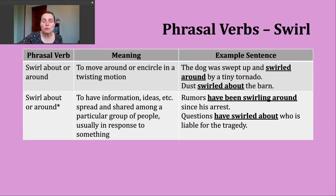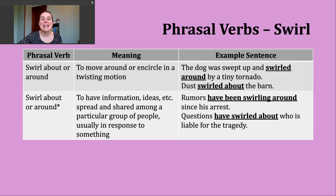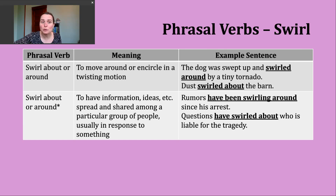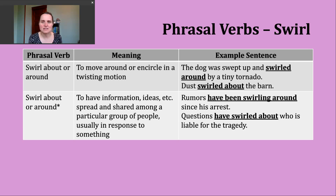There are a couple of phrasal verbs that you might encounter: swirl about or swirl around. Each of these has two definitions, and they're both connected. The first way you might hear them used is to mean to move around and encircle something in a twisting motion. Let's look at some example sentences.